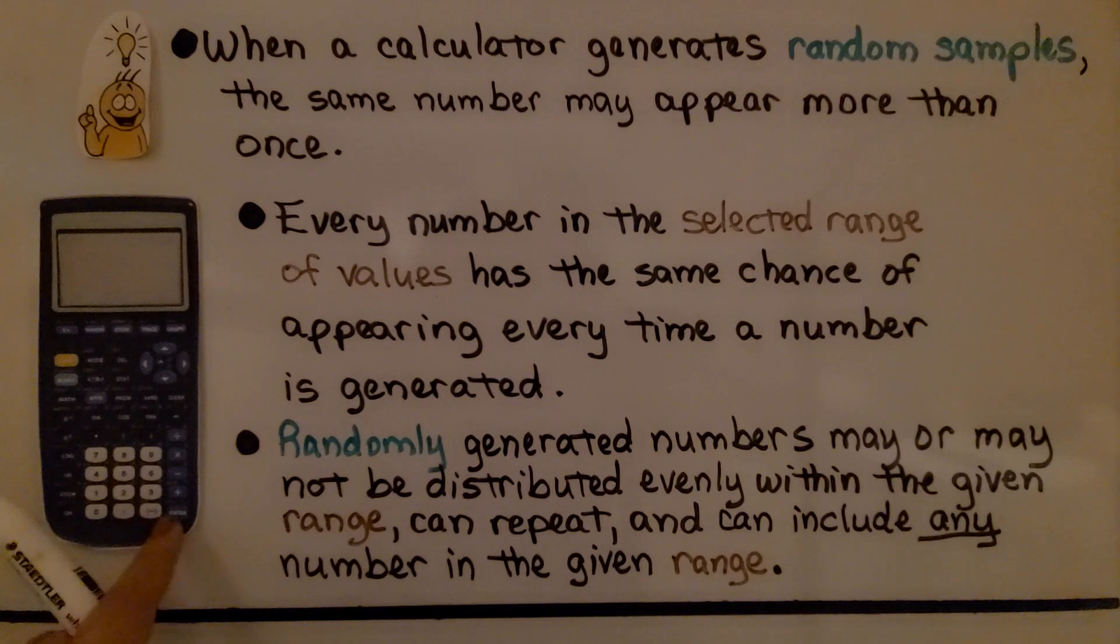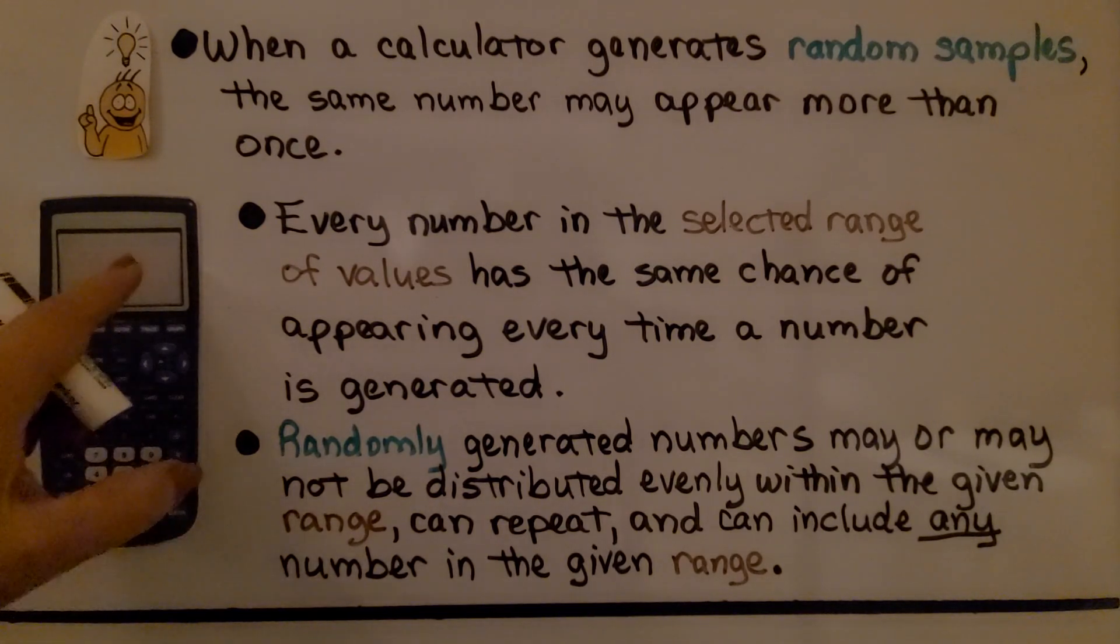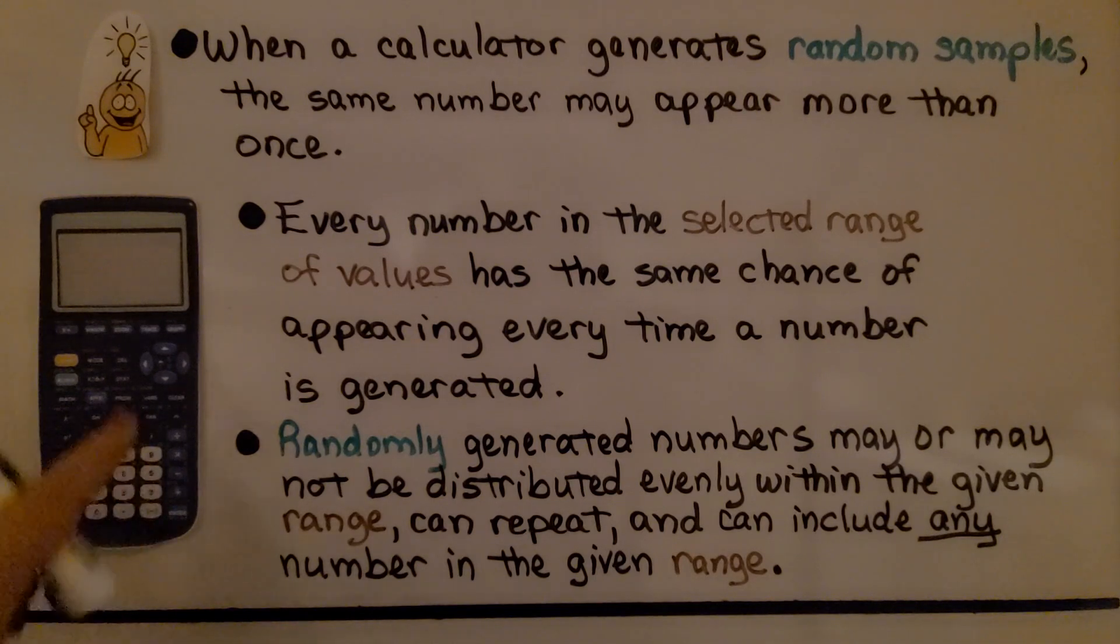Every number in the selected range of values has the same chance of appearing every time a number is generated. So we may push Enter and get 126, push Enter again, get 250, push Enter again, and get 126 again. Randomly generated numbers may or may not be distributed evenly within the given range. It can repeat and can include any number in the given range.